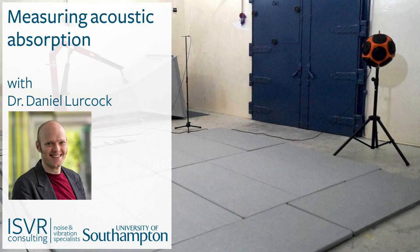When it comes to noise control and room acoustics applications, we often need to know just how acoustically absorptive a material is. The acoustic absorption offered by a particular material is usually characterised by an absorption coefficient. There are various methods that we can use to estimate this absorption coefficient, and I'm going to walk you through one of them, which is measurements taken in a reverberation chamber.